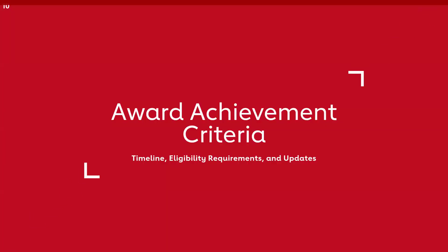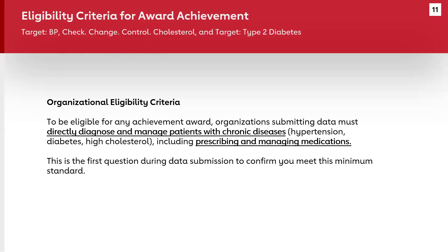Now let's walk through some basic award criteria and measure specifications. First, who is eligible for an award? We have a broad range of outpatient organizations that participate, but the fundamental criteria is that your healthcare organization must directly diagnose and manage patients with these chronic disease conditions — meaning your organization must be prescribing and managing the medications of patients who have these conditions. If you're primarily a screen-and-refer organization, you would not be eligible for an award, though our quality improvement tools and resources remain freely available to all.